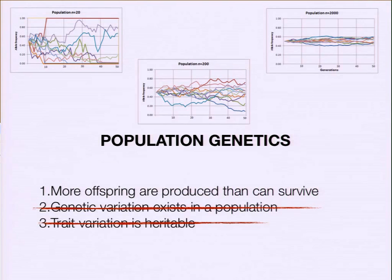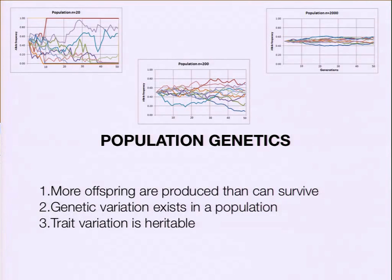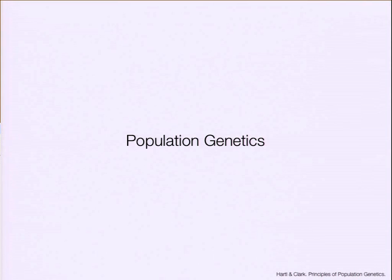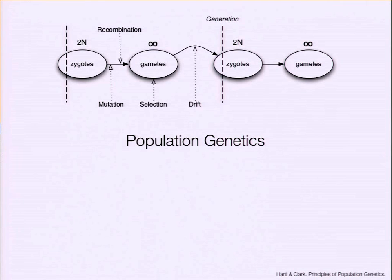Population genetics is the ab initio understanding of how evolution works. It developed ways for calculating how genetic variation changes throughout a population's lifetime and where that variation comes from. It's built around mathematically and rigorously explaining how traits can change over time. We have a generational life cycle in which four major processes take place: mutation, recombination, selection, and drift.